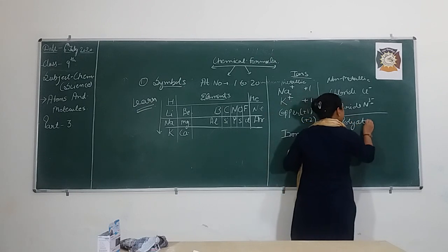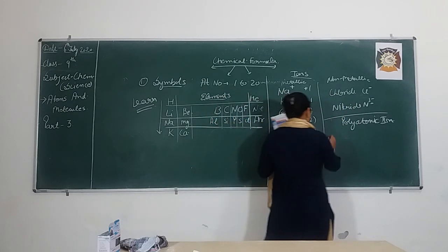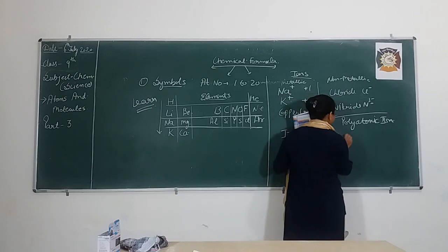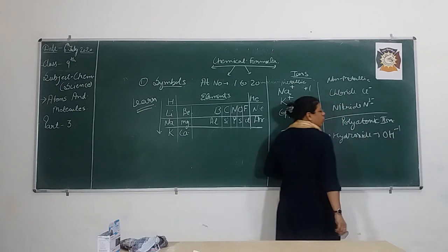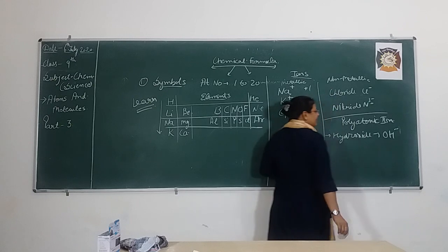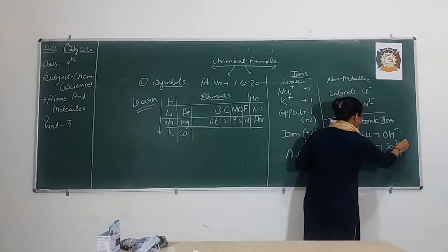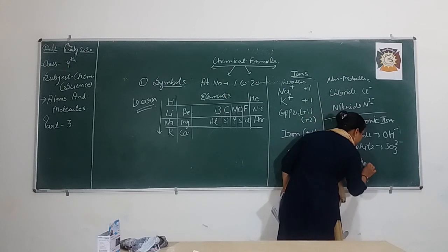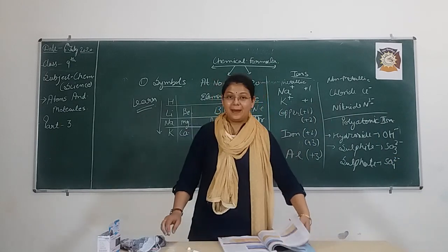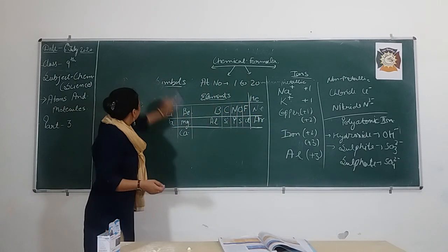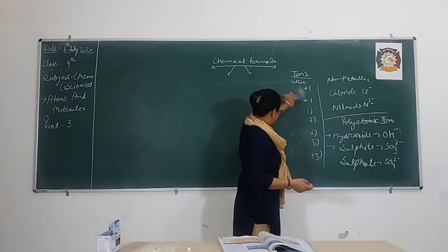Third are your polyatomic ions — when the number of atoms is more than one and of different elements. For example, hydroxide is OH negative. If nothing is written after the symbol that means 1 is present. You have to learn these things in chemistry so that it will be easy for you to write the chemical formula for the compounds.